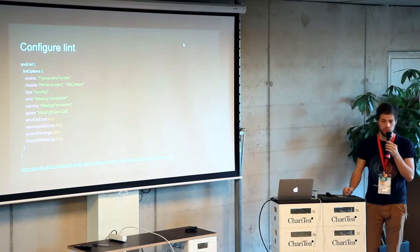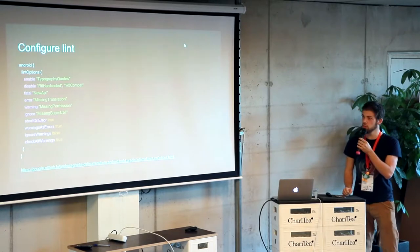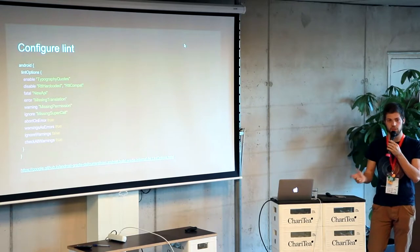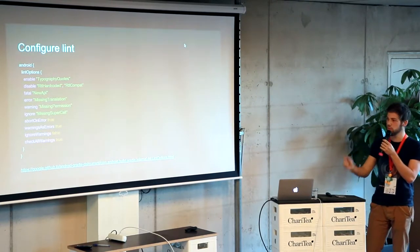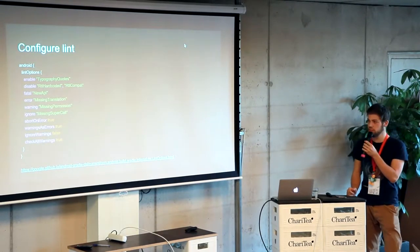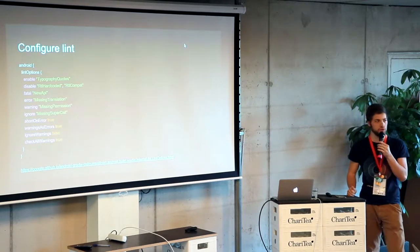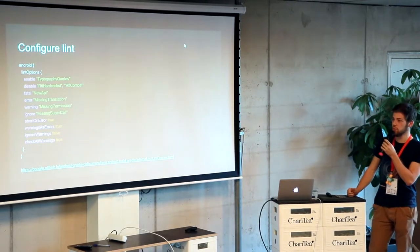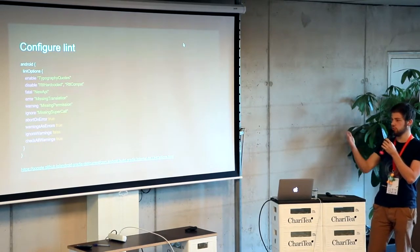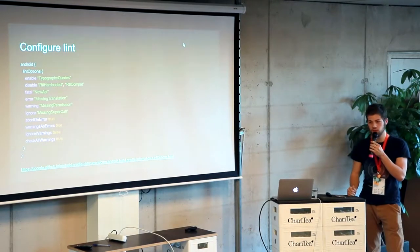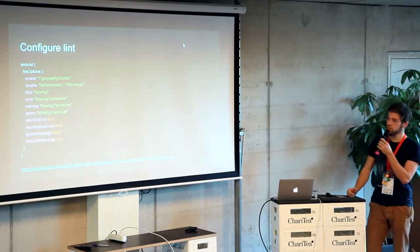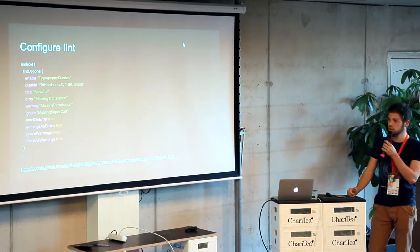We can also use the Lint options in Gradle. There's the lintOptions block in Android with a bunch of things - you can enable and disable particular rules by giving it the ID. Fatal, error, warning, and ignore are there to change the severity of rules. For instance, we can say the new API is no longer an error, it's a fatal one. Or missing translation, which used to be fatal, is now an error. For fatal, the build is going to break when you build the APK.